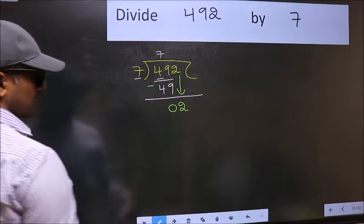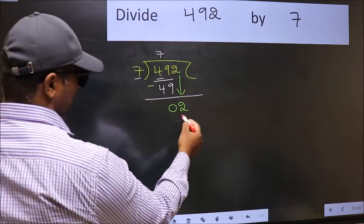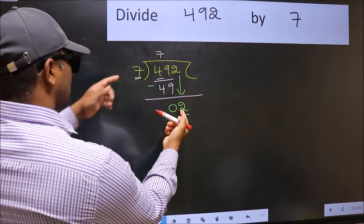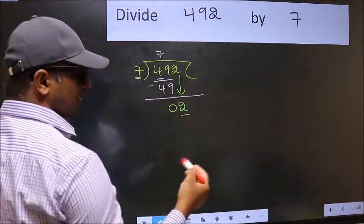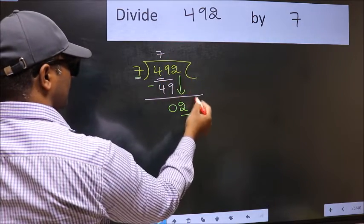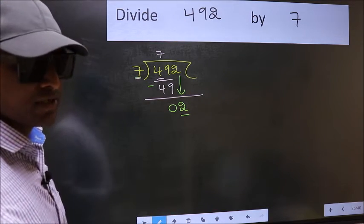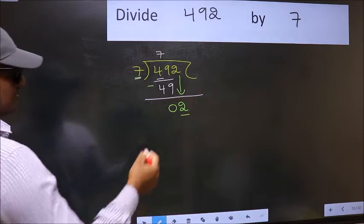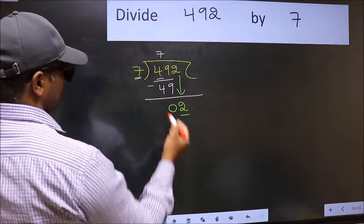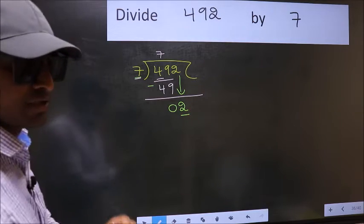After this step, the mistake happens. And the mistake is this. Here we have 2 and here 7. 2 is smaller than 7. So what many do is they directly put dot and take 0, which is wrong. Why is it wrong? Because just now you brought this number down, and in the same step you want to put dot and take 0, which is wrong.